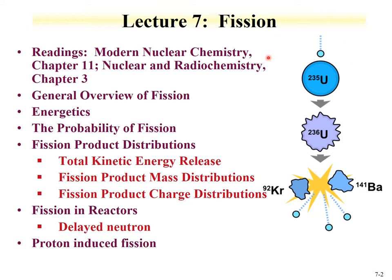An overview of the fission process: an isotope such as uranium-235, which has a relatively high thermal neutron capture cross-section, absorbs a neutron and goes into an excited state. That excited state has two routes of de-excitation: it can decay by emission of a photon going back to the ground state of uranium-236, or the uranium-236 can then fission, resulting in two fission products with some neutrons. We'll discuss the fission products, neutron emissions, probabilities, and energetics.